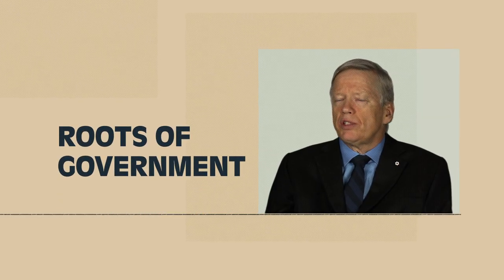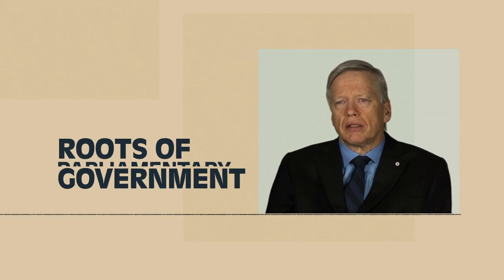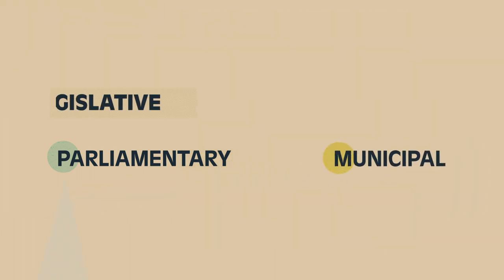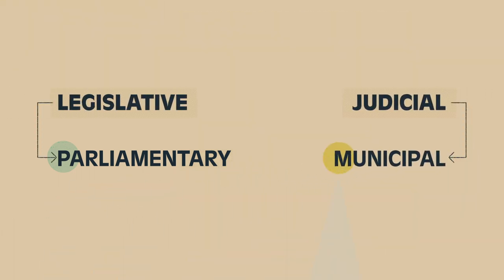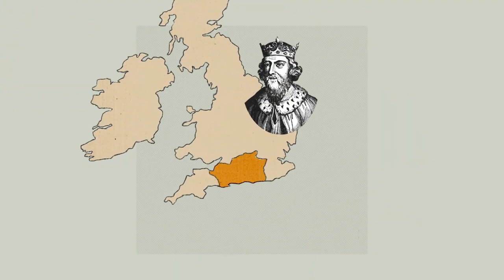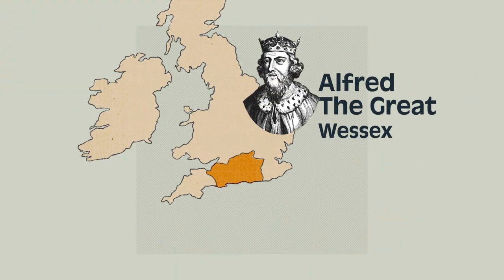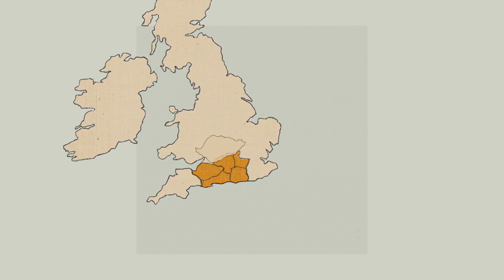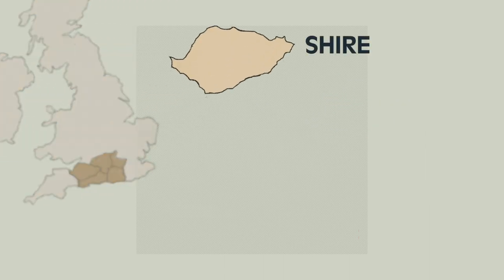British Columbia has two systems of government: parliamentary and municipal. Parliament is rooted in lawmaking, municipal in law-keeping — legislative versus judicial. These forms are used around the world but descend from the kingdom of Wessex of Alfred the Great, who unified England. Wessex was divided into shires governed by a shireeve, or sheriff, which retains its law and order connotation.